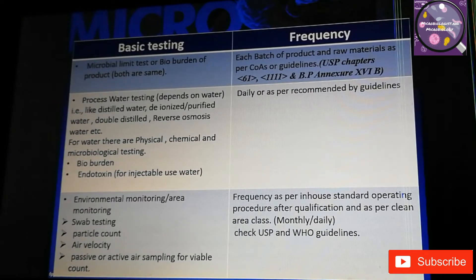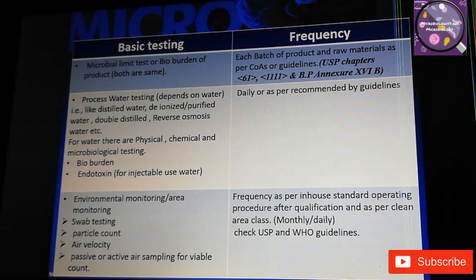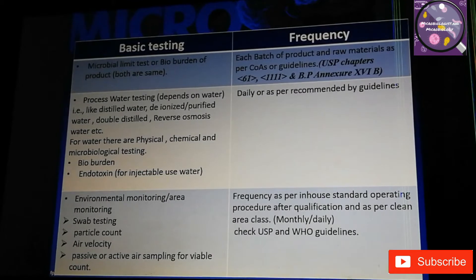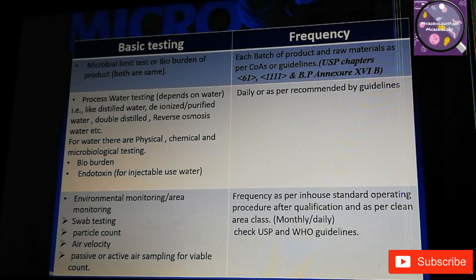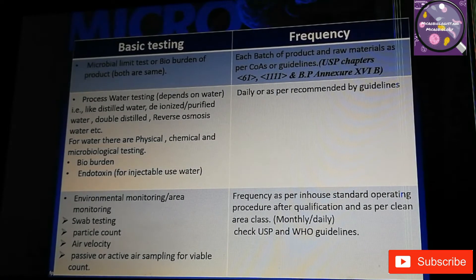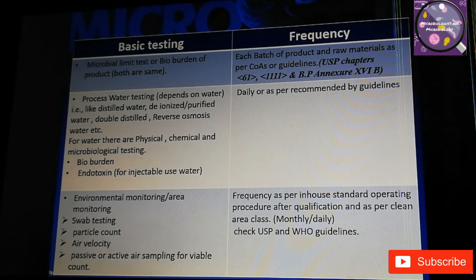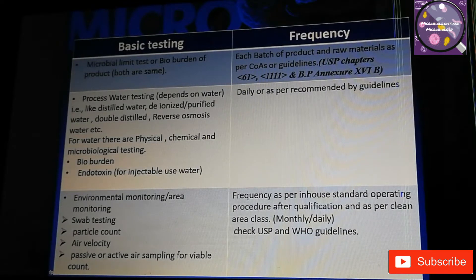We do detection and enumeration of microbial growth in your sample. The frequency is each batch of product and raw materials as per their COAs or guidelines. If the certificate of analysis of any raw material has not included a microbial limit test or bio burden, we will not perform it. Otherwise, the USP chapter numbers are 61 and 1111, and BP/EP is 2.6.12 and 2.6.13.